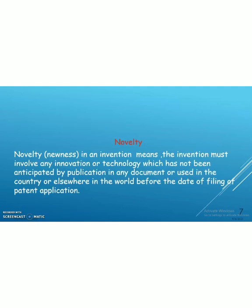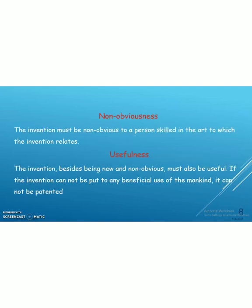Some important characteristics required for an invention to be patented: first, novelty — the newness of an invention is very important; it must not have been published or patented in the country or in the world before. Second, non-obviousness — the invention must be non-obvious to a person skilled in the art to which the invention relates. Third, usefulness — the invention must be useful; if it is not beneficial to mankind, it cannot be patented.